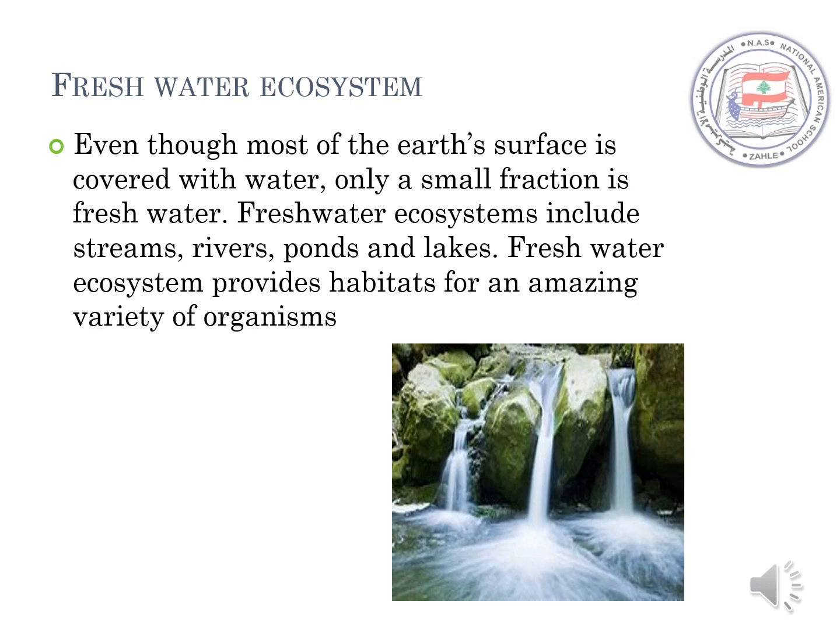The first type of the aquatic ecosystem is called the freshwater ecosystem. Even though most of the Earth's surface is covered with water, only a small fraction is freshwater. Freshwater ecosystems include streams, rivers, ponds, and lakes. Freshwater ecosystems provide habitats for an amazing variety of organisms.